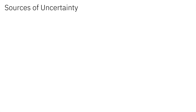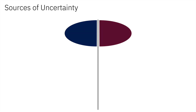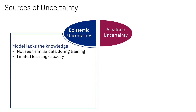However, to fully understand the uncertainty of a language model's prediction, not only should we quantify the total uncertainty, but it is also important to understand the sources of uncertainty. In particular, previous works have shown that uncertainty can be divided into two sources: epistemic uncertainty and aleatoric uncertainty. Epistemic uncertainty occurs when the model itself lacks the knowledge to answer the question, which can be due to the model not seeing similar data during training or the limited learning capacity of the AI model.